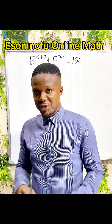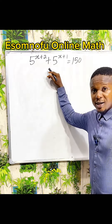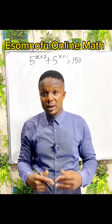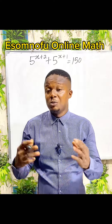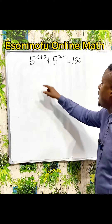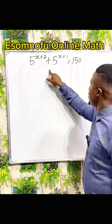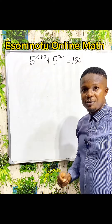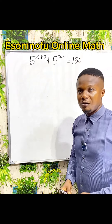Hello everyone, this is Asomnoff Online Math. Let us solve this exponential equation. If you are new here, consider subscribing to my YouTube channel at Asomnoff Online Math so that you'll be notified anytime I upload a new video. So we have 5 to the power of x plus 2, plus 5 to the power of x plus 1, everything equal to 150, and our target is to find the value of x.